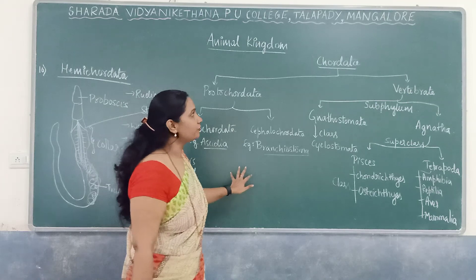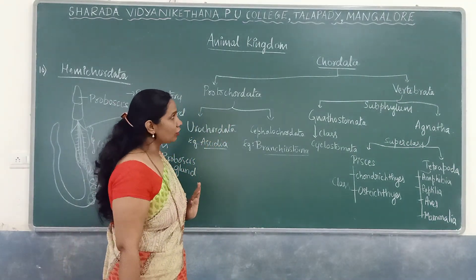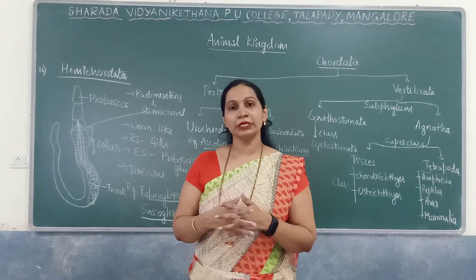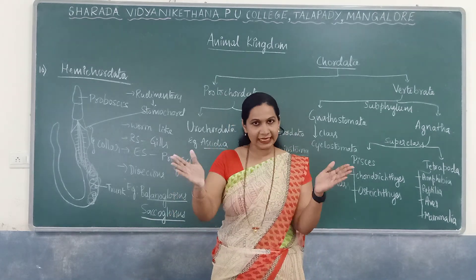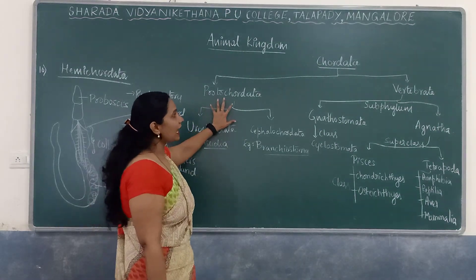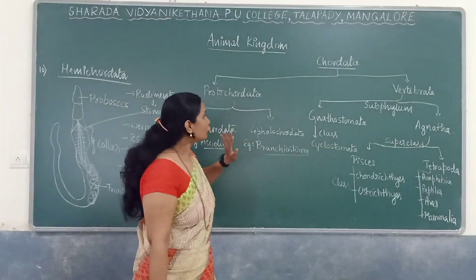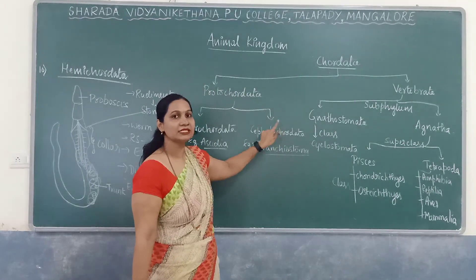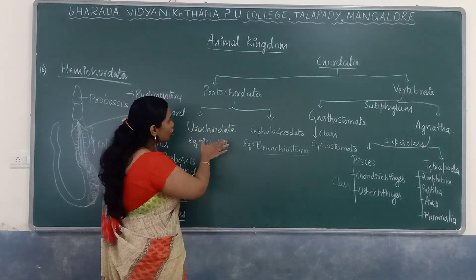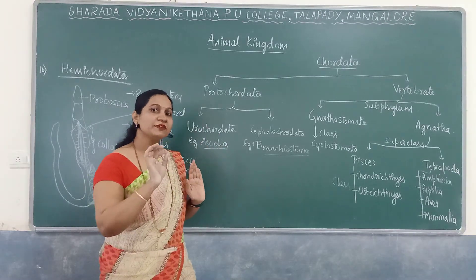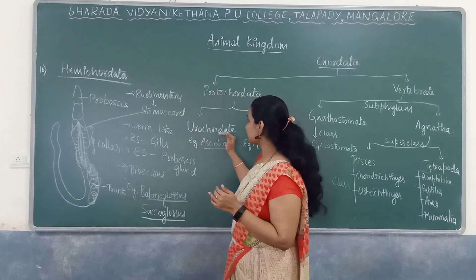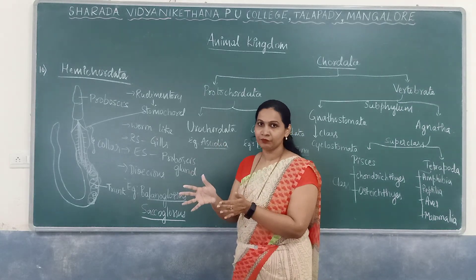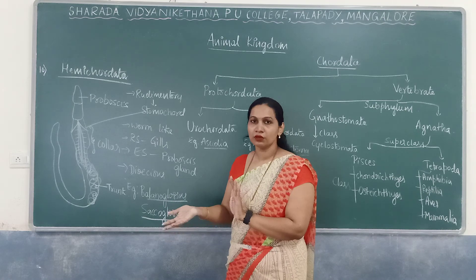Next we move to the last phylum — phylum Chordata. 'Chordata' means presence of notochord. This phylum is divided into Protochordata and Vertebrata. Protochordata includes Urochordata and Cephalochordata, where the notochord is present in the larval stage. In Urochordata, the notochord is found only in the larval tail; after metamorphosis the adult does not retain it.